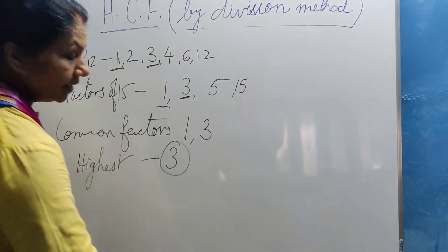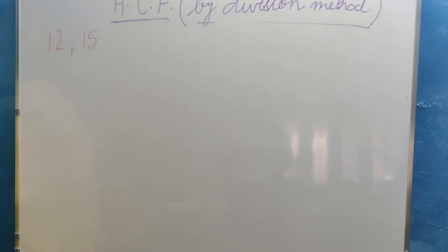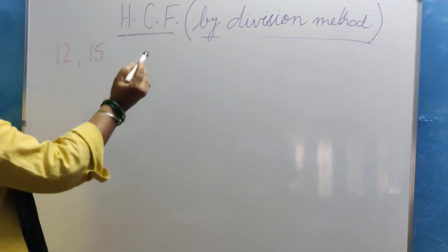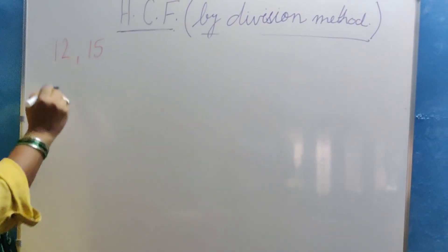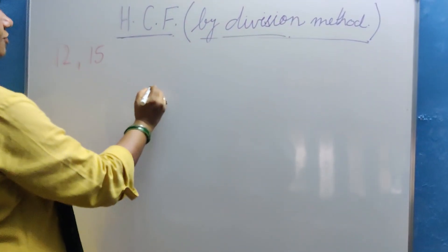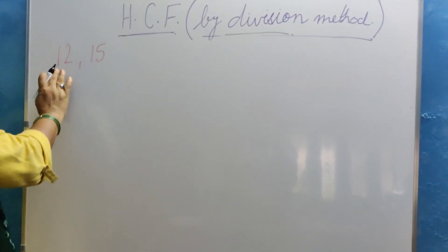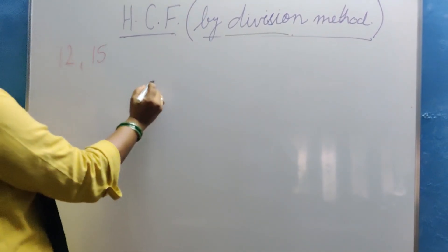We have to be focused on the division method. Today we will learn about how to find out HCF by division method. Now as the name suggests division method, so we divide. Divide what by what? The bigger number. Among these which is bigger, 15 is bigger.